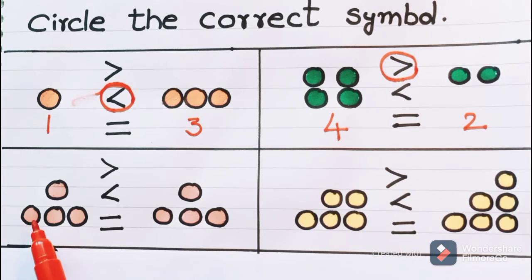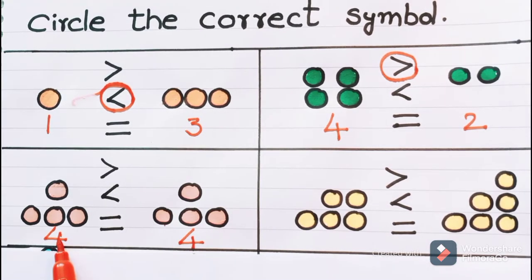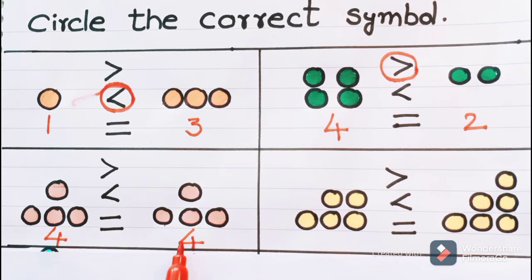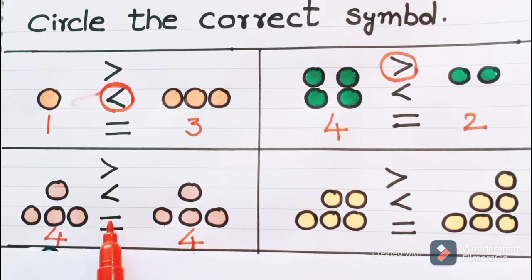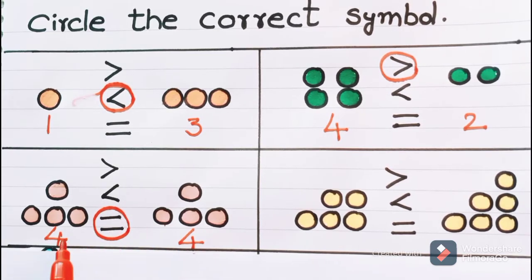Now look at here. How many circles are here? One, two, three, four — there are four circles. Here also one, two, three, four. So here the number is four and here also it is four. Are these same numbers or different numbers? These are same numbers. Four is same as four. So for same numbers, which symbol do we have to use? It is equal to symbol. For the same numbers, we have to use this symbol. Four is equal to four.